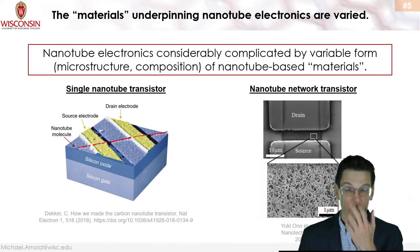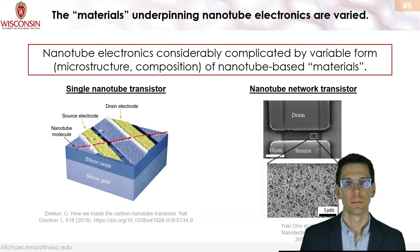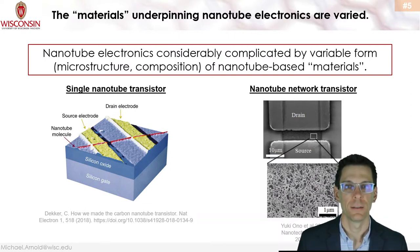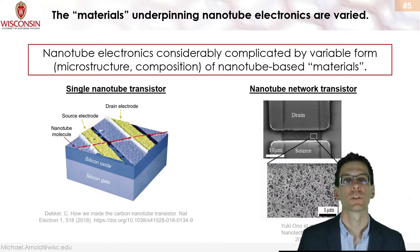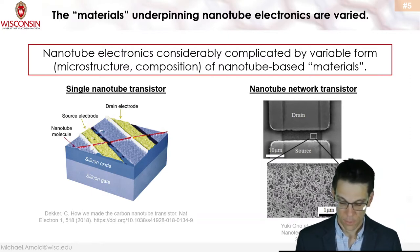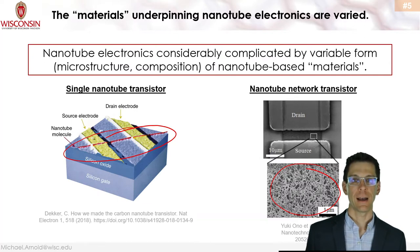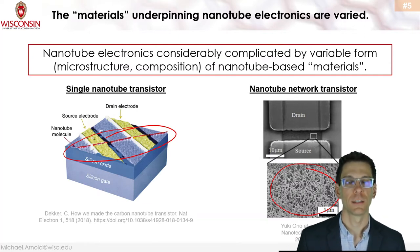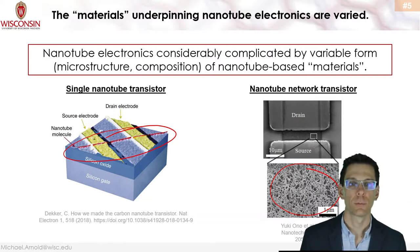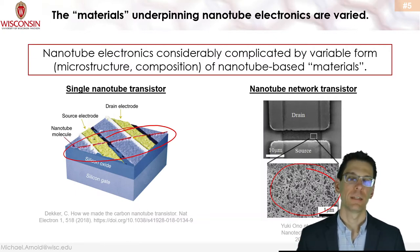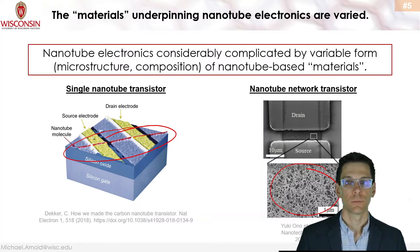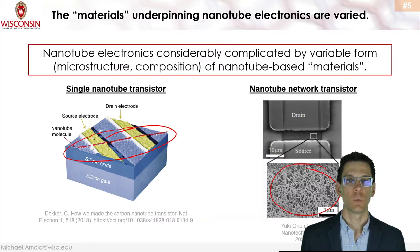It's also important to note that what we consider a nanotube material varies considerably in microstructure and composition. There are single nanotubes in a transistor, and networks of many nanotubes — each with different morphologies and processing histories. Furthermore, individual nanotubes differ in diameter and what's called the chiral angle, so there's no such thing as a single carbon nanotube material that's always the same.